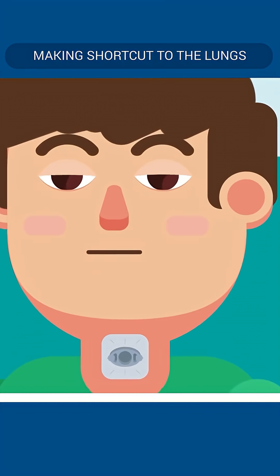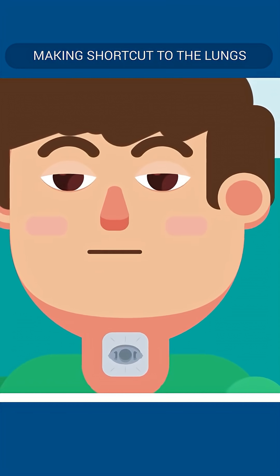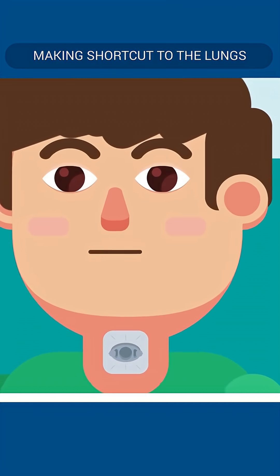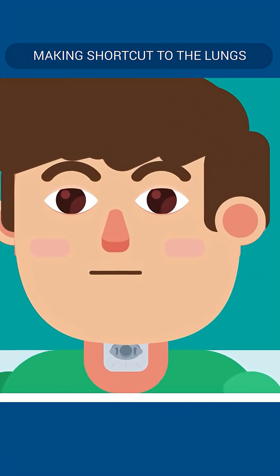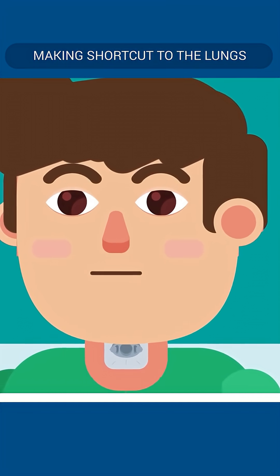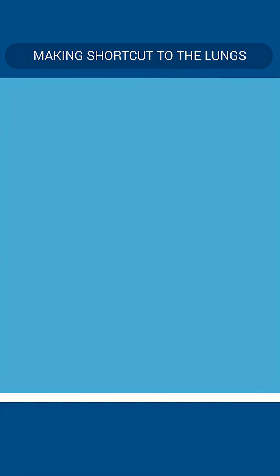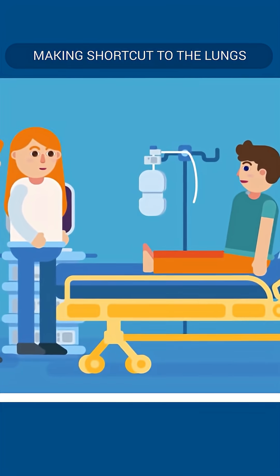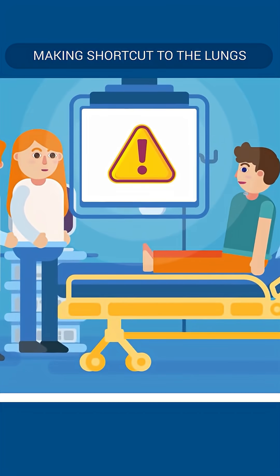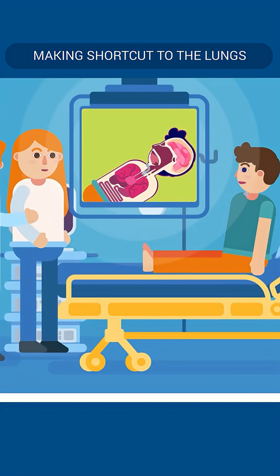The skin incision is closed and the tracheostomy tube is secured to the skin via stitches or simply tied around the neck. After tracheostomy is done, certain precautions and care are required to ensure proper functioning of the tracheostomy tube and to prevent complications.